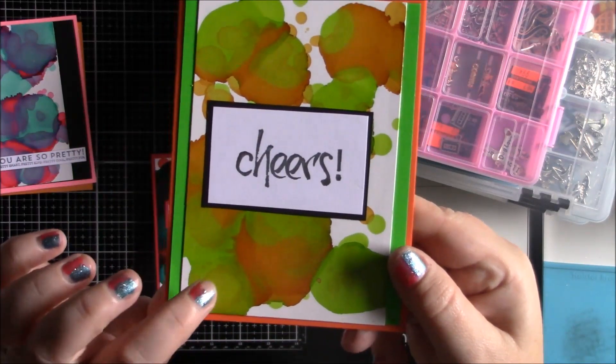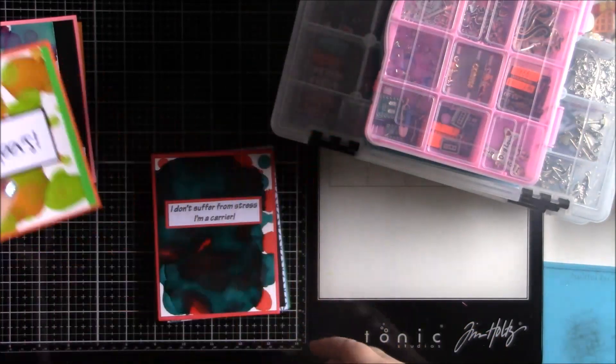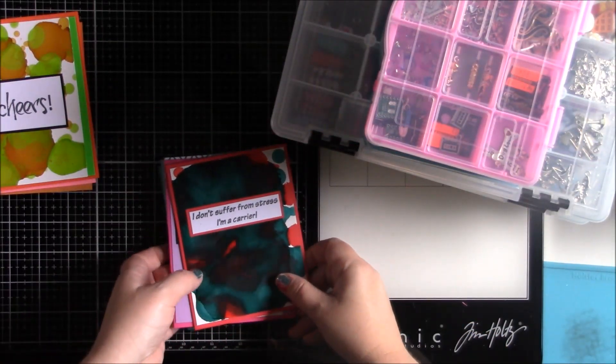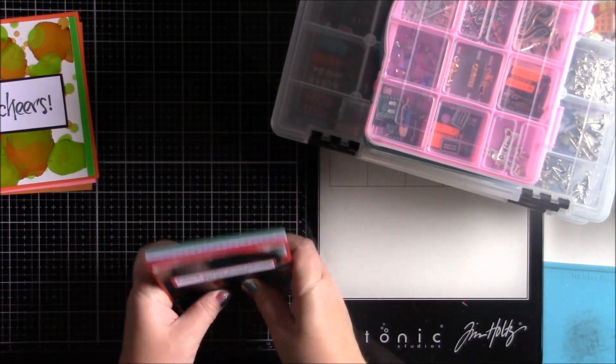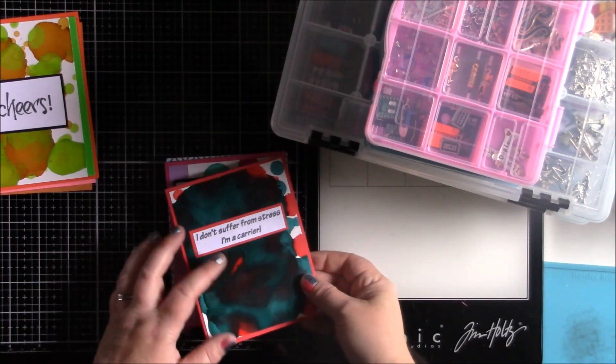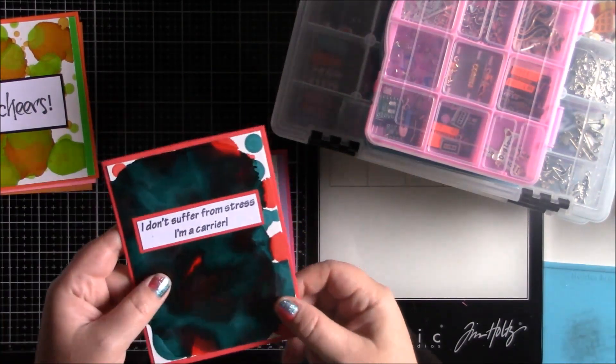And I used the Tim Holtz alcohol inks and then for the paper I used poster board from Dollar Tree. So I ran out of Yupo and I bought a bunch of the poster board from Dollar Tree a long time ago, like last year or something or earlier this year. And just decided to use that.